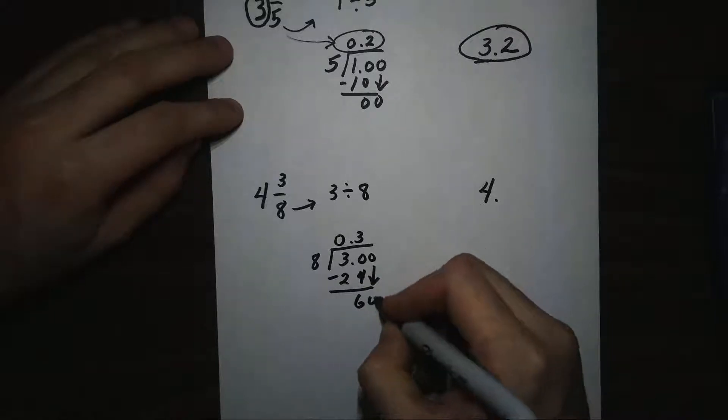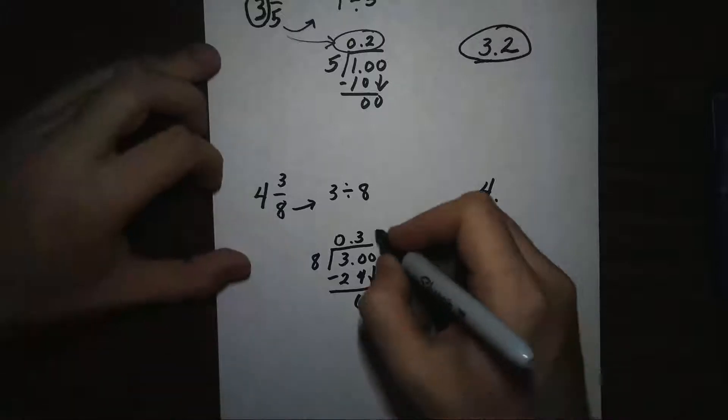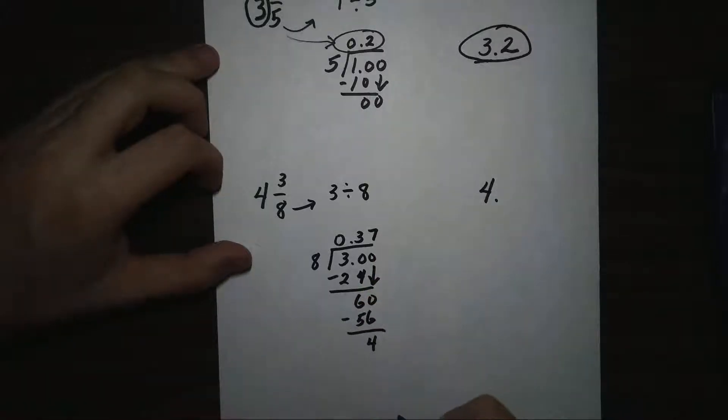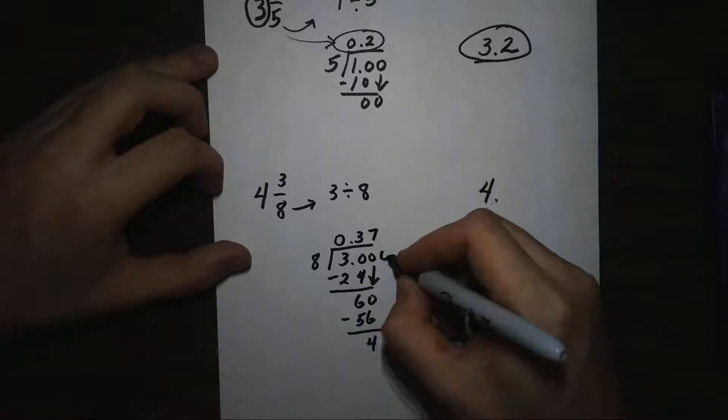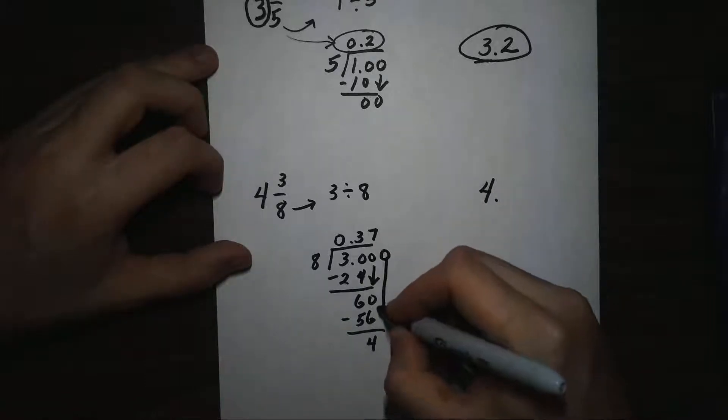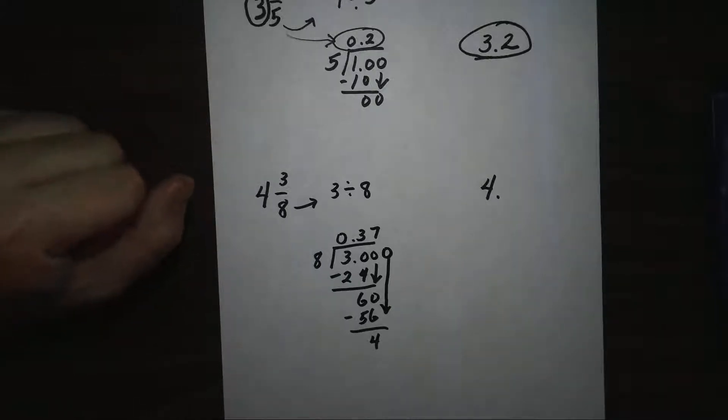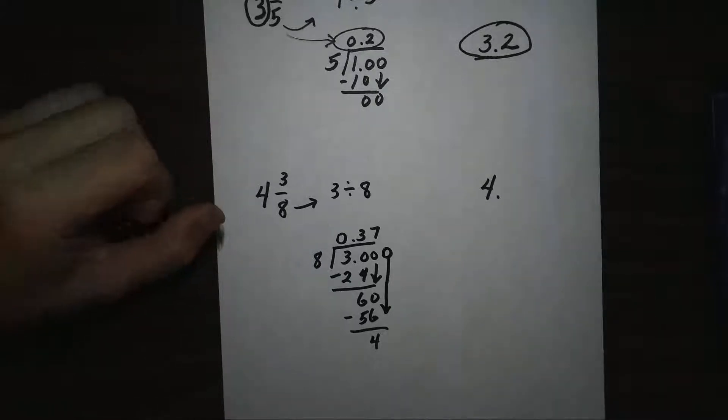Bring down my 0. 8 goes into 60 seven times. Now, because I still have a remainder, I'm going to go ahead and add another 0 here and keep going for a little bit to see if I see any repetition or to see if my decimal terminates or stops.